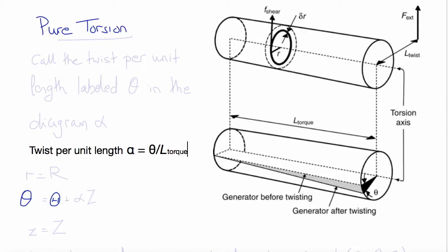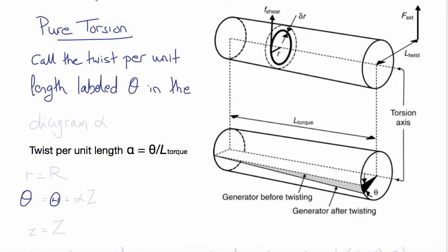Every plane along the length twists a little bit less in proportion to the distance along the length, so the twisting angle is proportional to that distance. We'll call that proportionality constant alpha, which equals theta divided by L_torque. The radius doesn't change, the length doesn't change — it's just a circumferential displacement that increases proportionately as we move along the length from Z equals zero to Z equals L_torque.